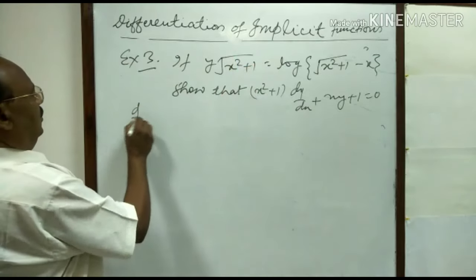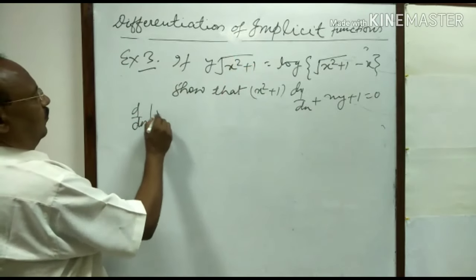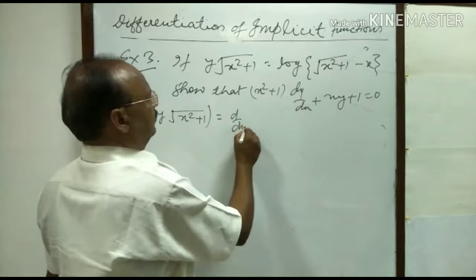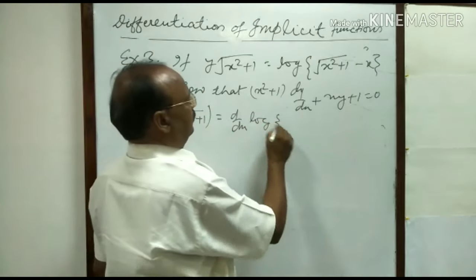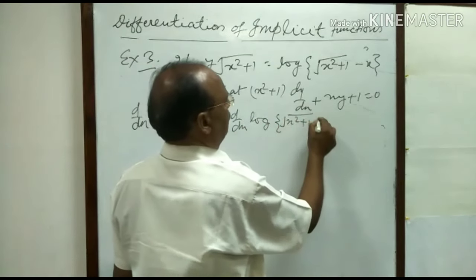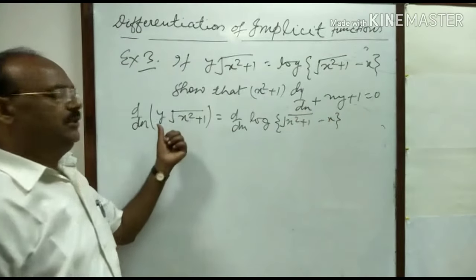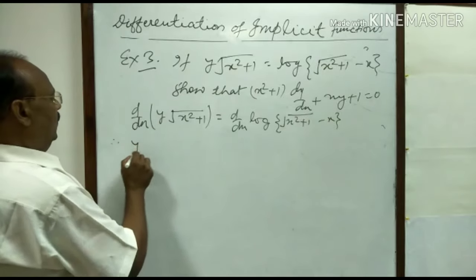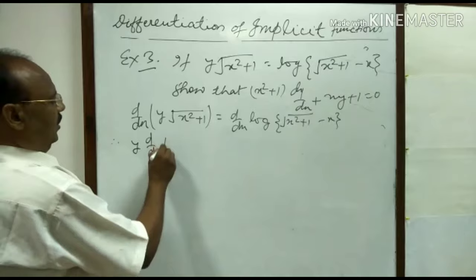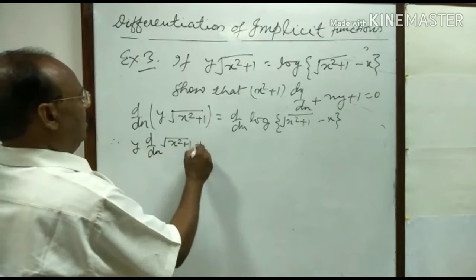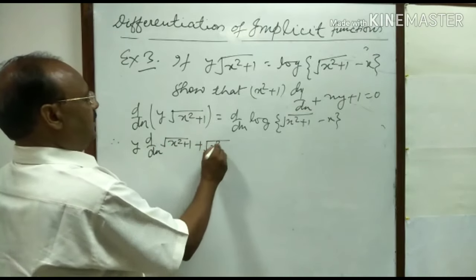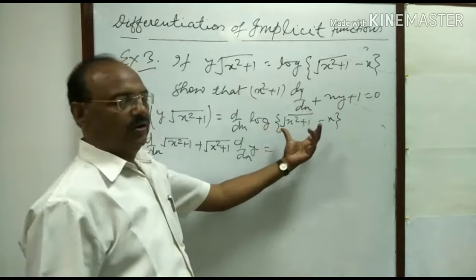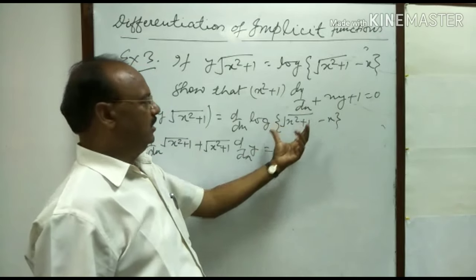We can write d/dx of y times root(x square plus 1) is equal to d/dx of log of root(x square plus 1) minus x. We will use the product rule on the left side. So: first function times derivative of second function, which is derivative of root(x square plus 1), plus second function root(x square plus 1) times dy/dx.